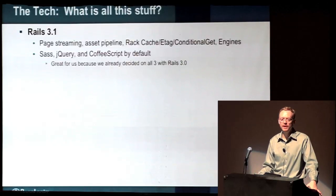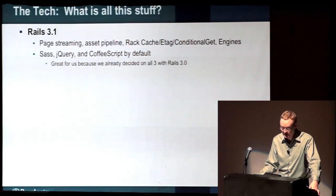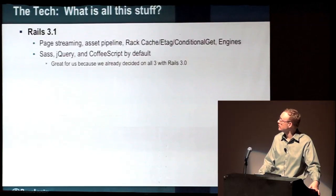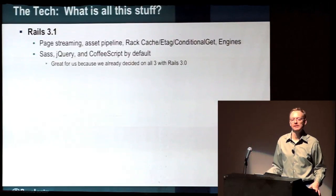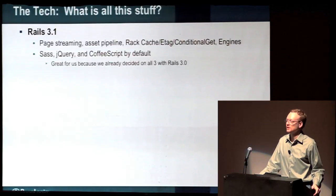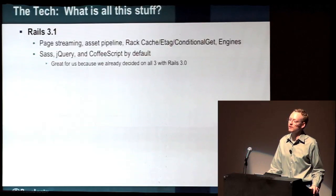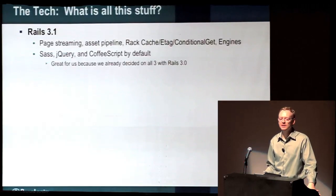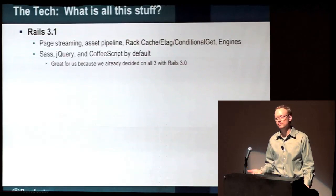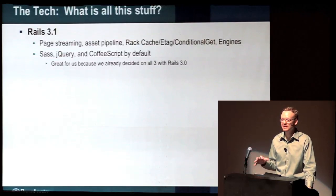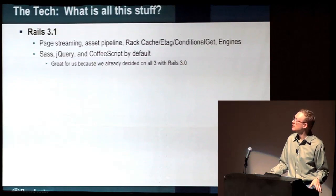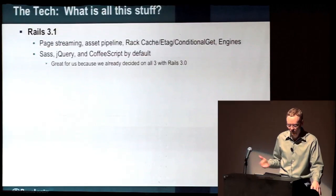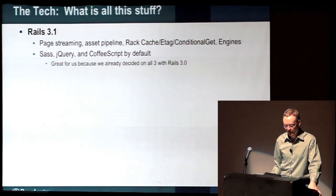Rack cache, ETags, and conditional GET support are all baked in by default now in the default middleware stack, so you get good caching capabilities right out of the box. Engines are also back — they had a bad reputation early on but have made a full comeback with the refactored Rails 3.0 code, giving you an isolated mini-app inside your app with its own configuration, views, cleanly separated plugins and hooks. And Sass, jQuery, and CoffeeScript are now there by default, which was great because we'd already decided to go with all three of those technologies back with Rails 3.0.